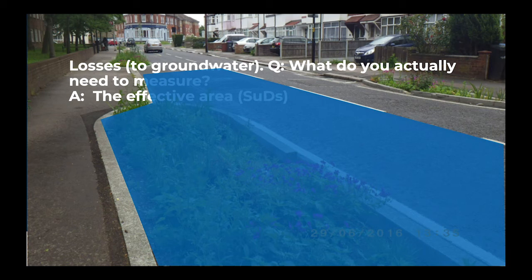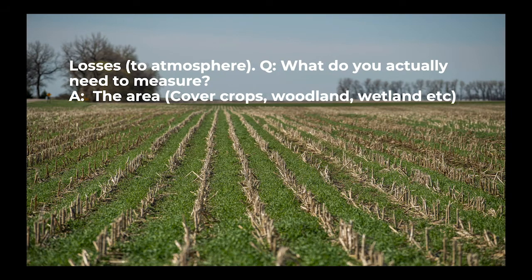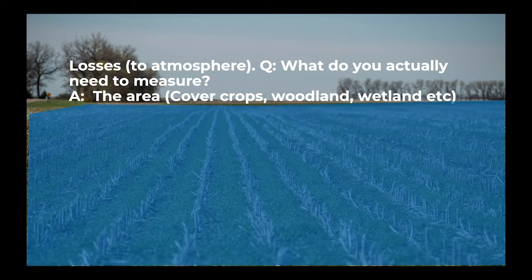If we are designing a change in land use to increase losses to the atmosphere — cover crops, woodlands, wetlands and so forth — again, all we're after is the area. That's what we put into the Agol tool. That's the end of the loss section.